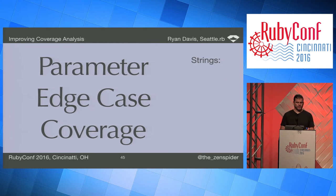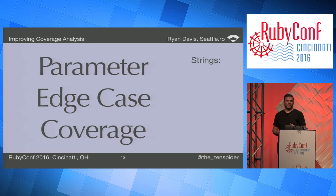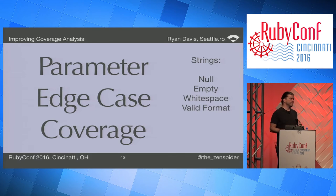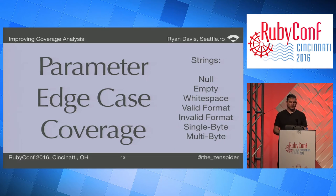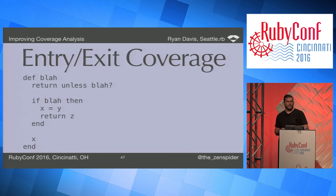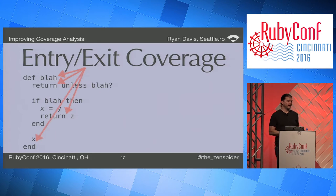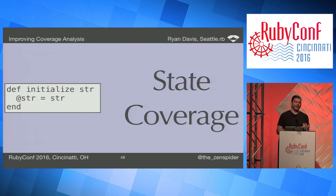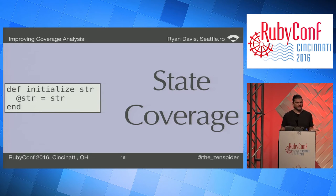There's also parameter edge case coverage: given a method argument with a known type, have you tested all the interesting data that type can be? For strings, these might include null, empty string, whitespace, valid format, invalid format, single-byte strings, and multi-byte strings. Path coverage asks whether you've walked all paths through a given method. Entry/exit coverage also exercises all explicit and implicit exits. State coverage checks whether the states of your objects are covered — which gets out of hand quickly due to data complexity.